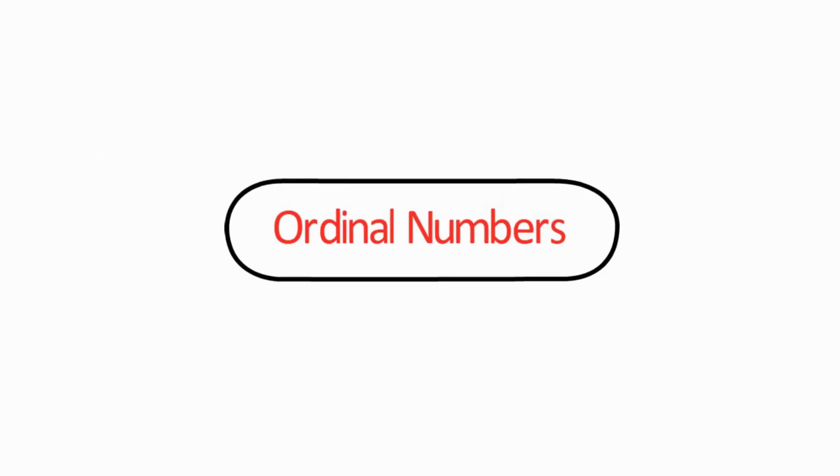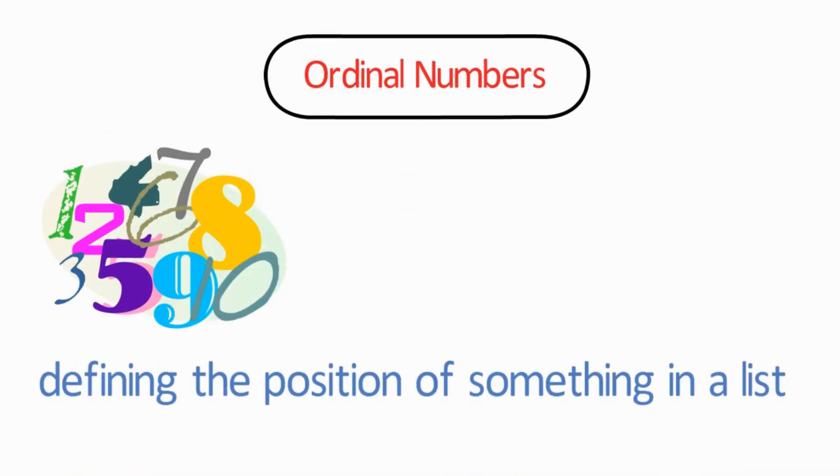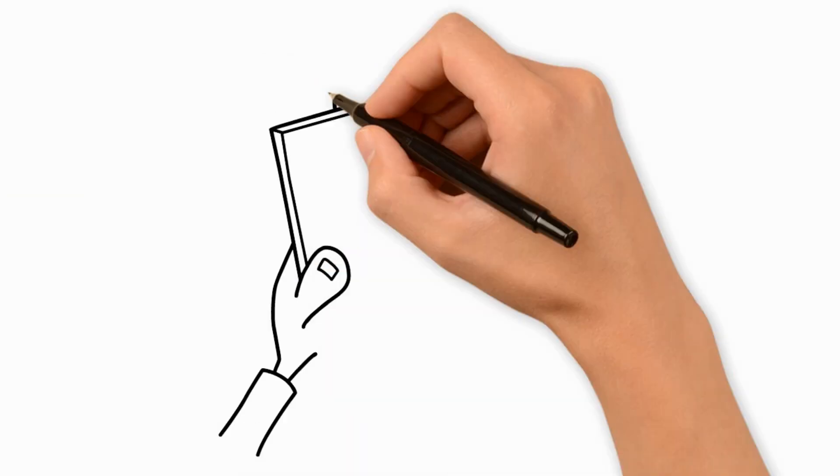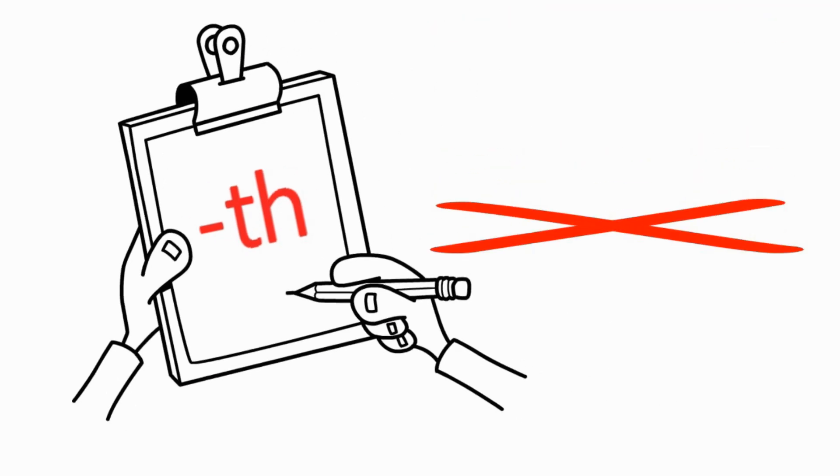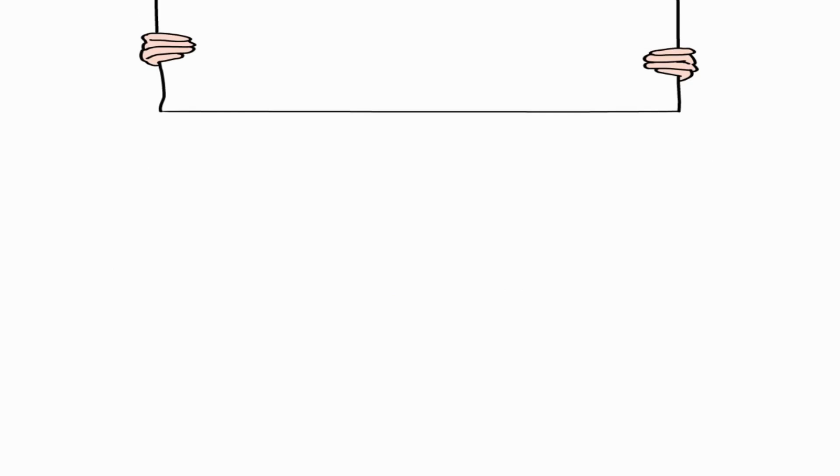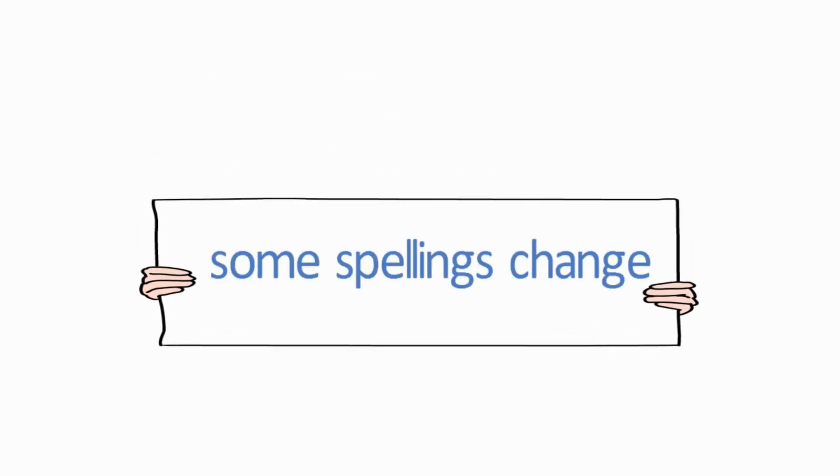Ordinal numbers are numbers defining the position of something in a list. They are normally made by adding TH at the end of all numbers, with the exception of 1, 2, and 3. You will also notice that some spellings change slightly.